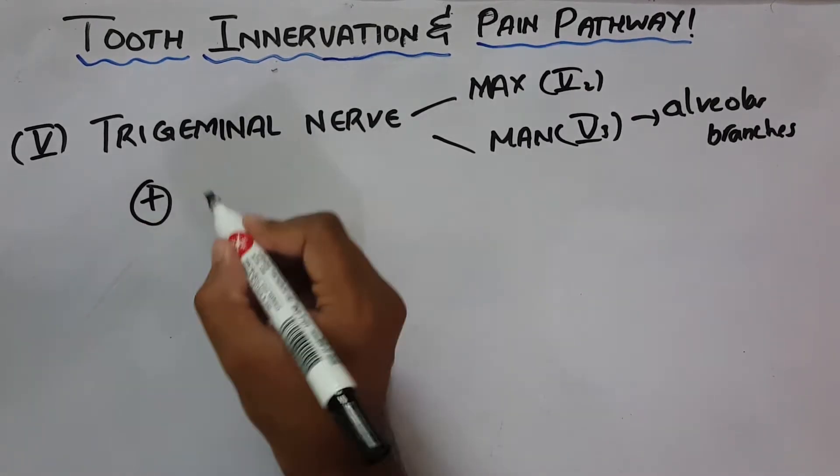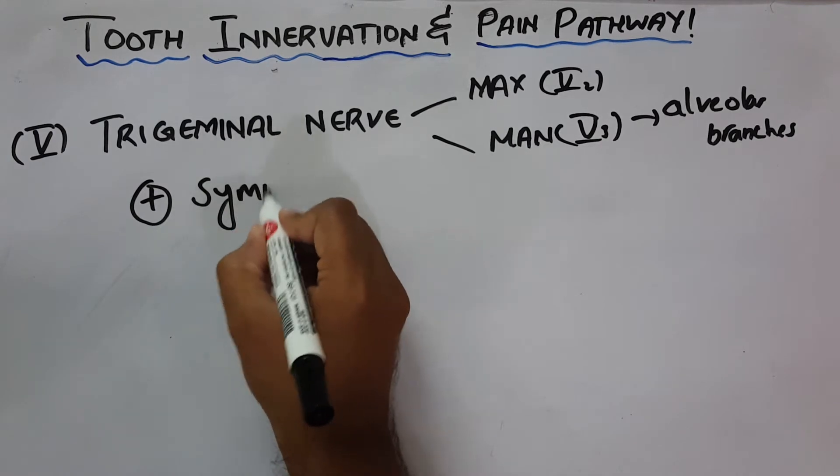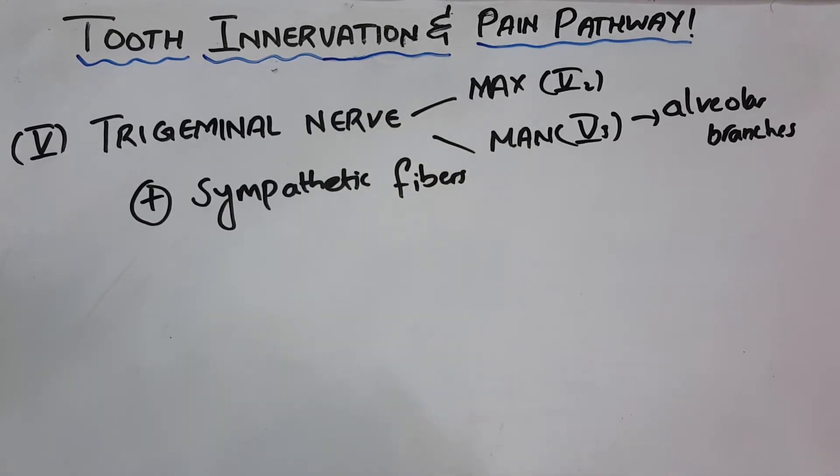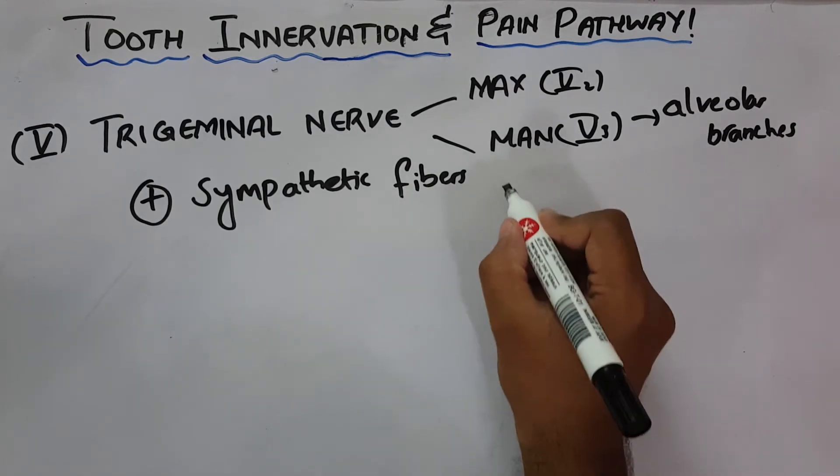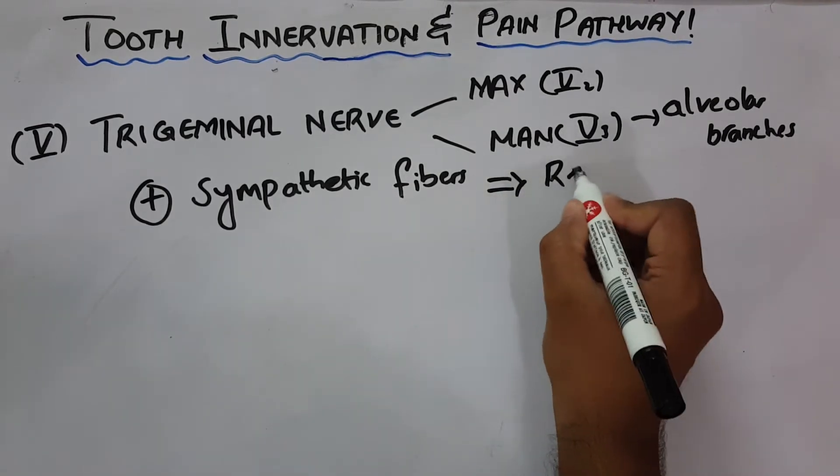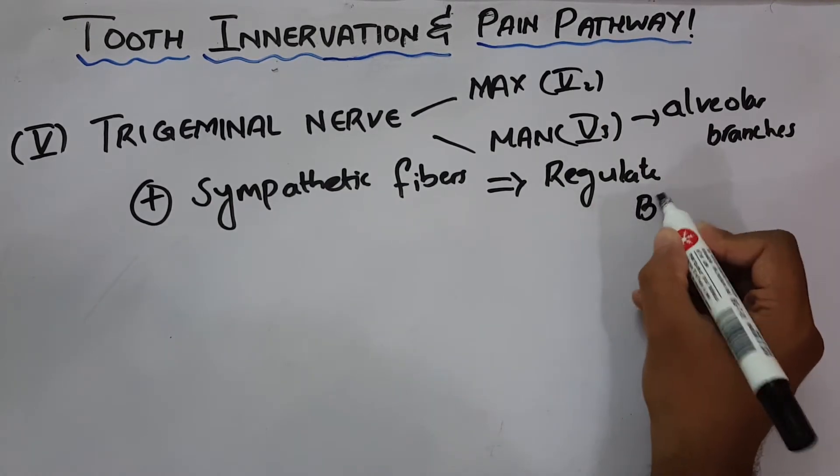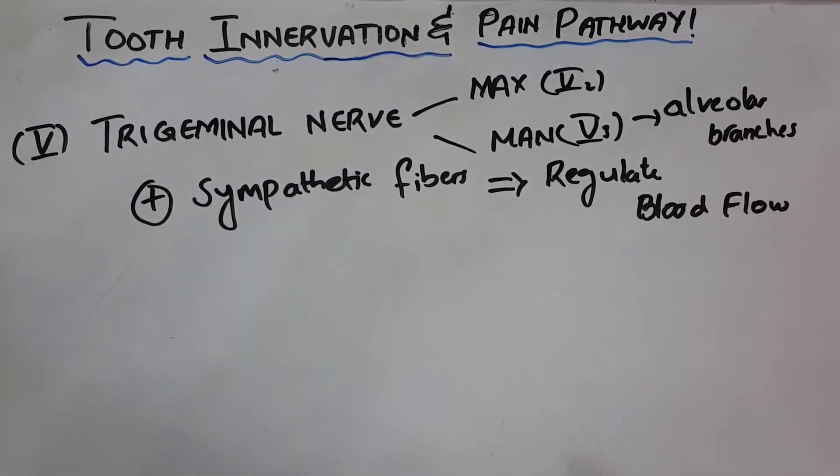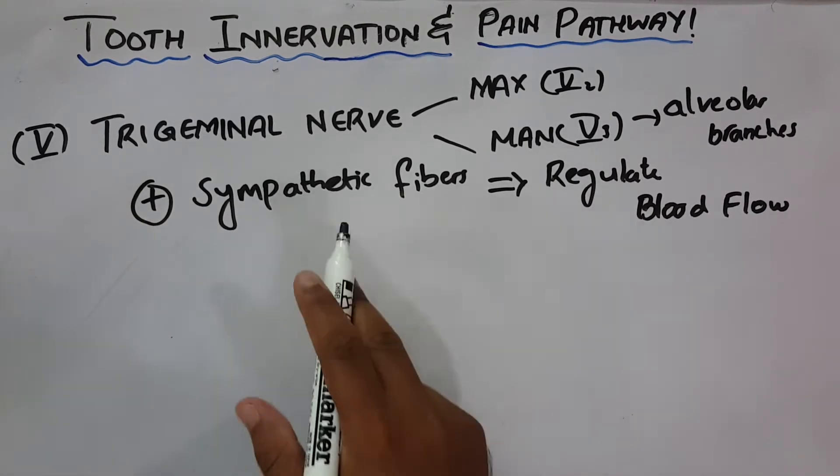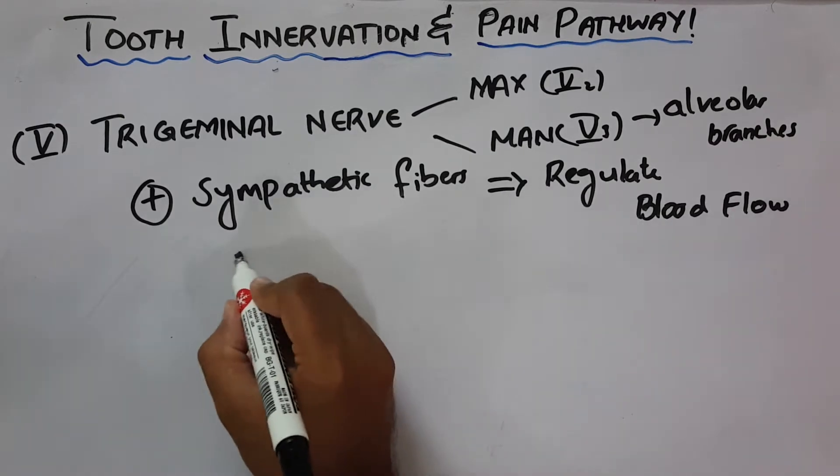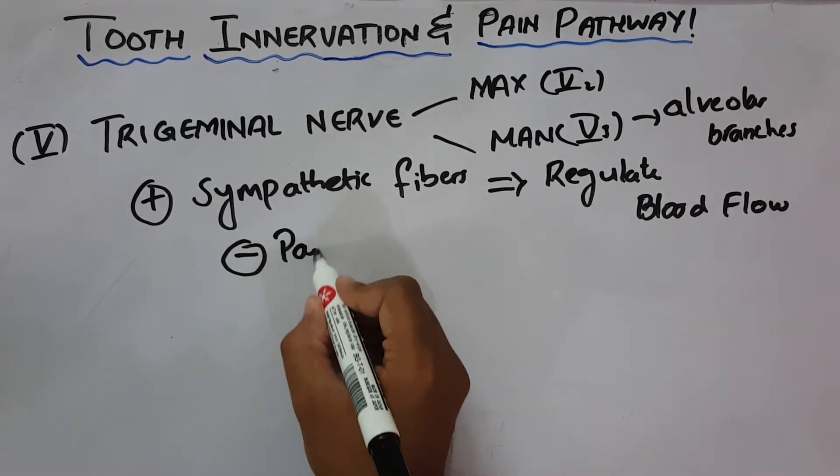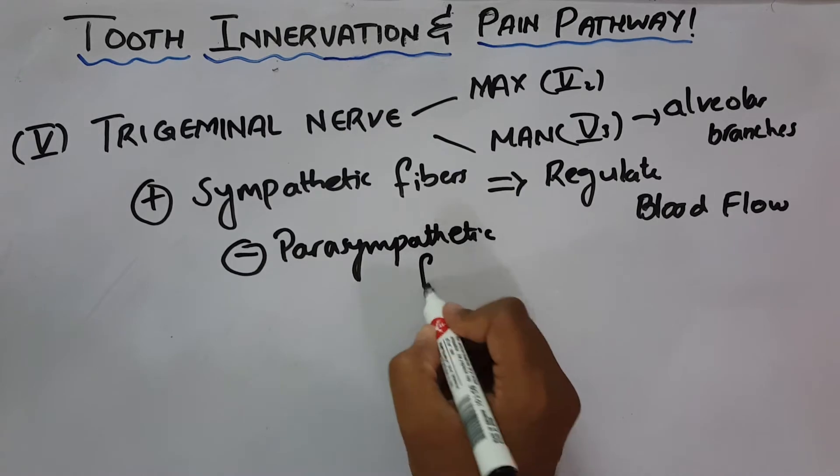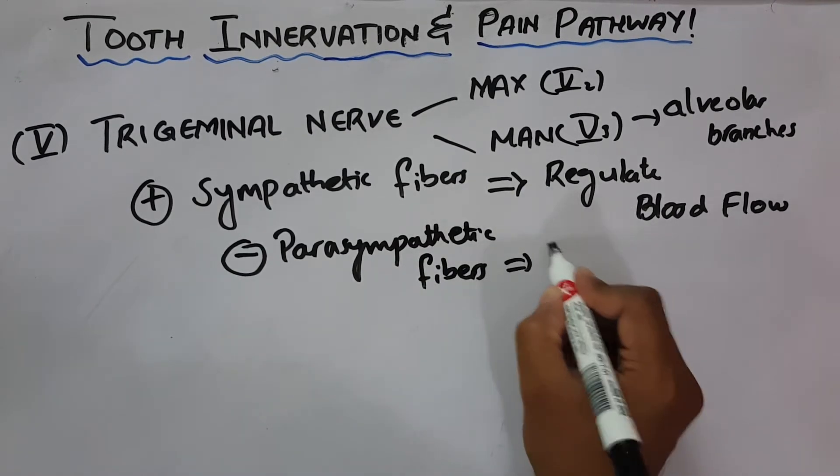In addition to the trigeminal nerve, we have some sympathetic fibers. These sympathetic fibers have a very important function and their function is to regulate the blood flow inside the tooth. There is no evidence of any parasympathetic fiber inside the tooth. If someone asks you about the role of parasympathetic fiber in the tooth, they have no role.